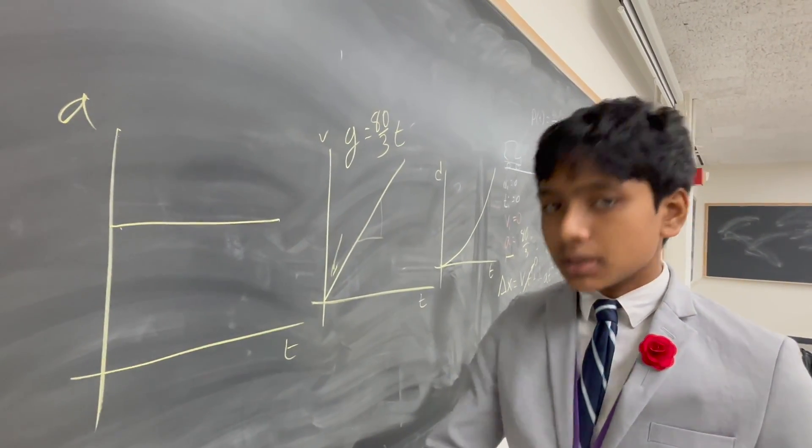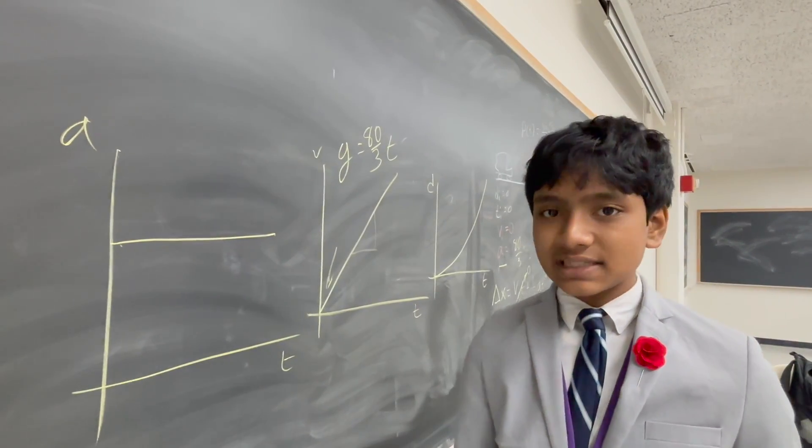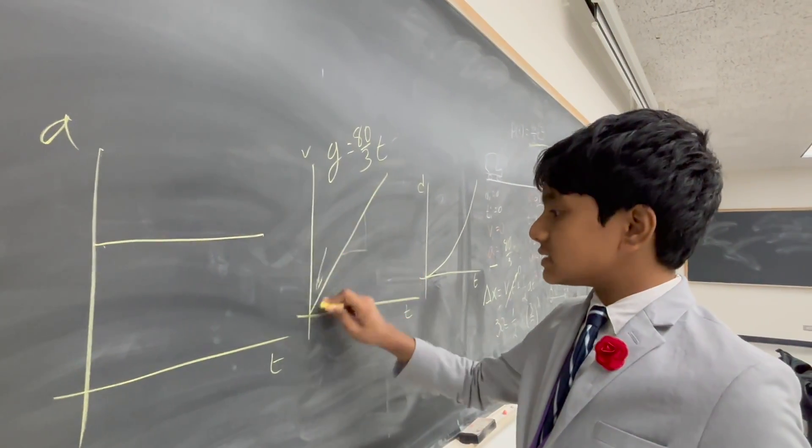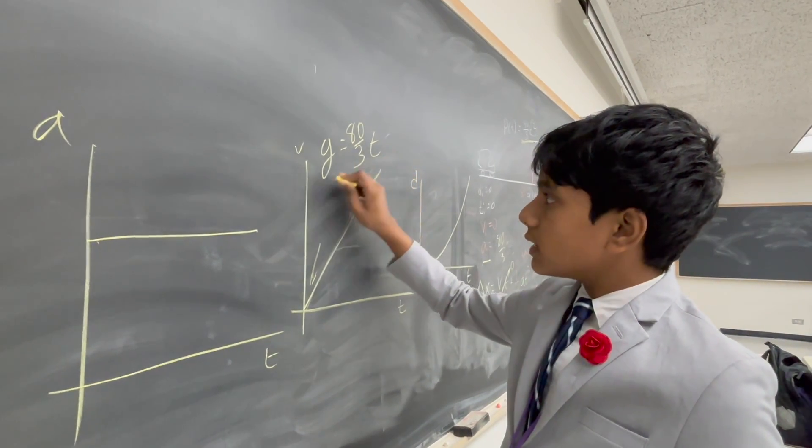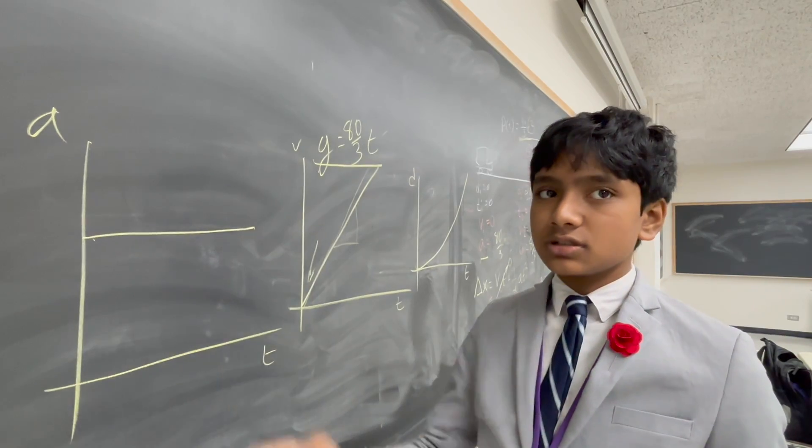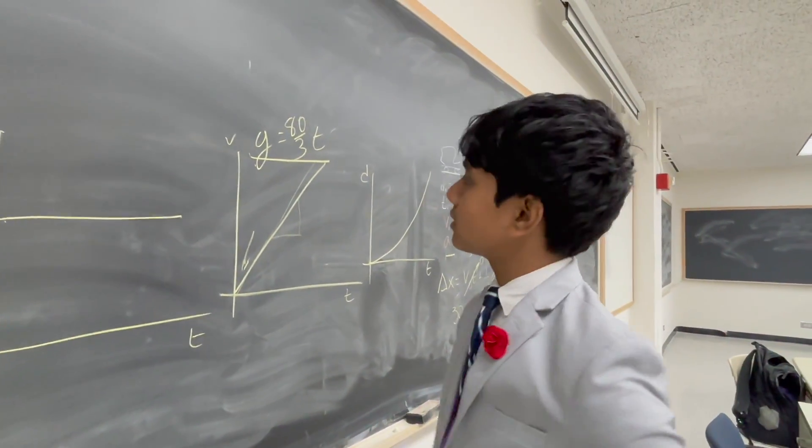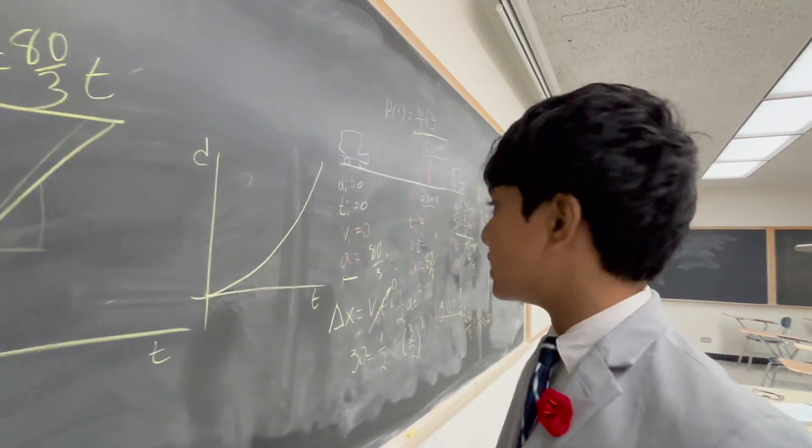and we know that the slope of the velocity function is always acceleration because slope is rate of change, and the rate of change of velocity is acceleration, which means that since this is a constant slope, then the slope of the linear function should just be equal to the rate of change. I mean, it's really simple. It's so simple I'm struggling to explain it.